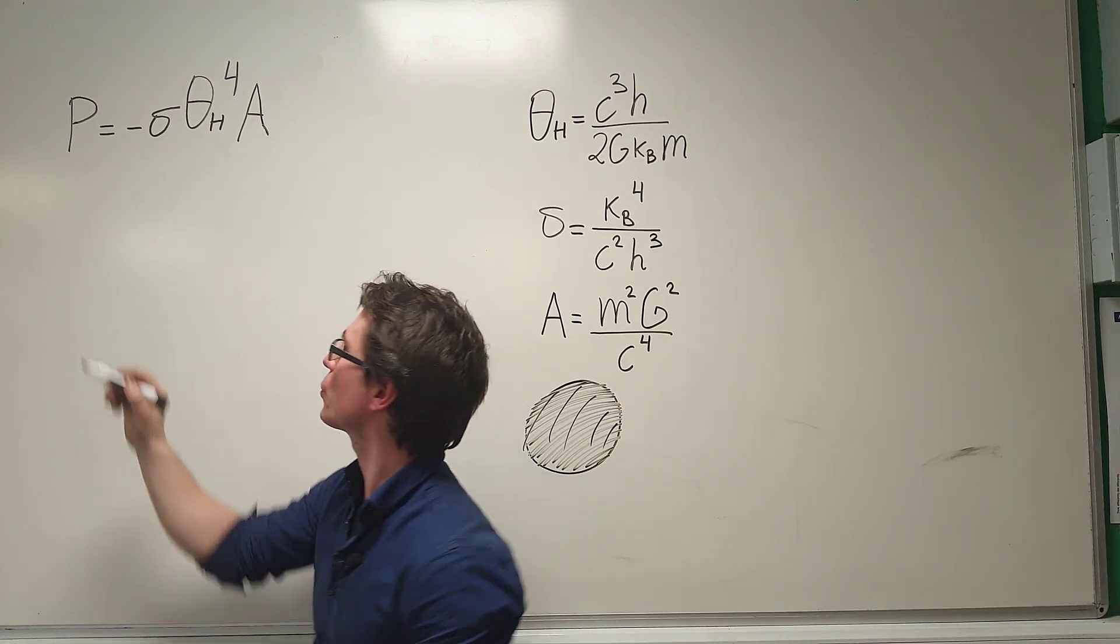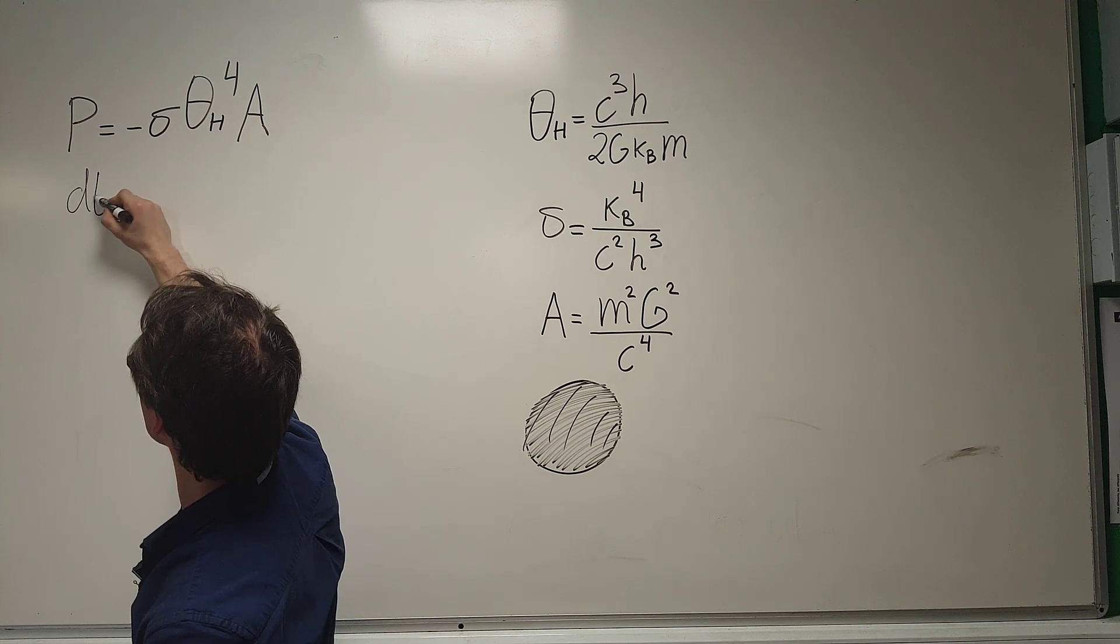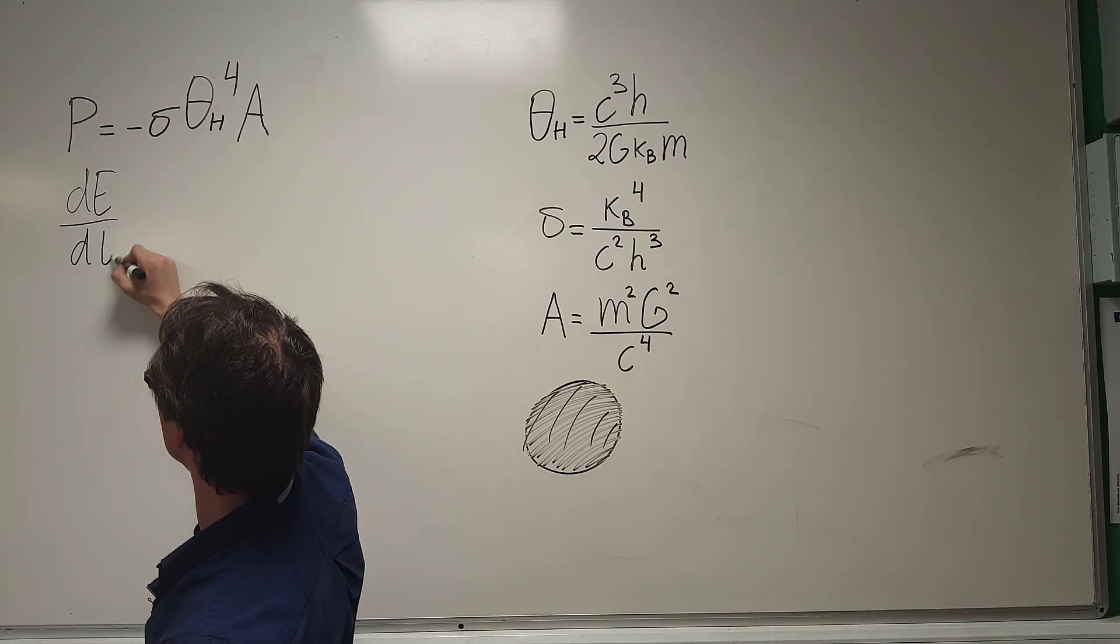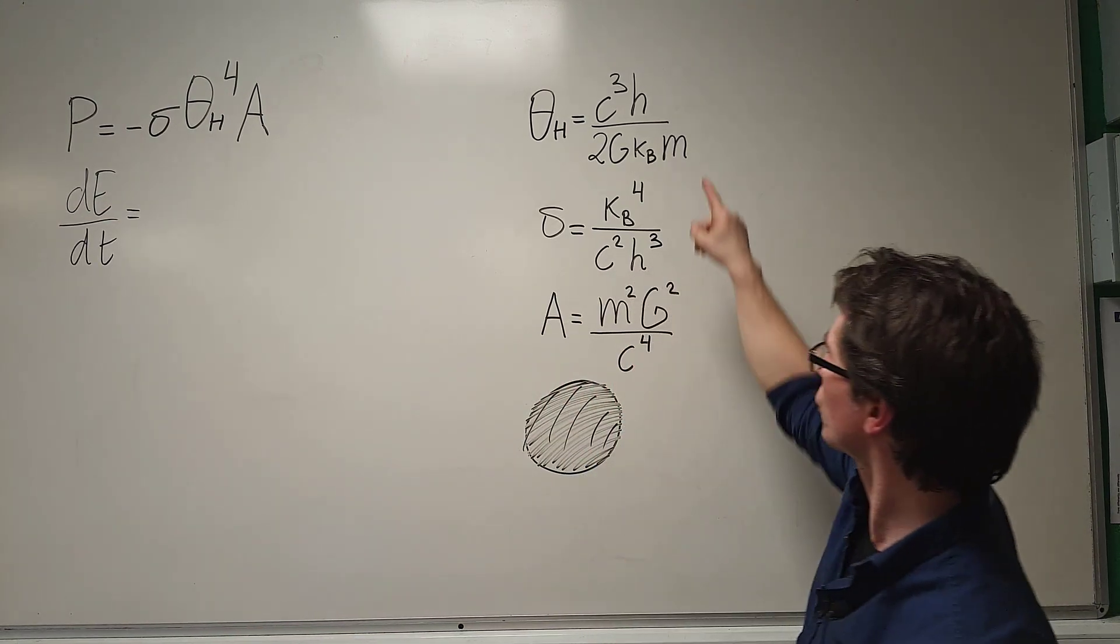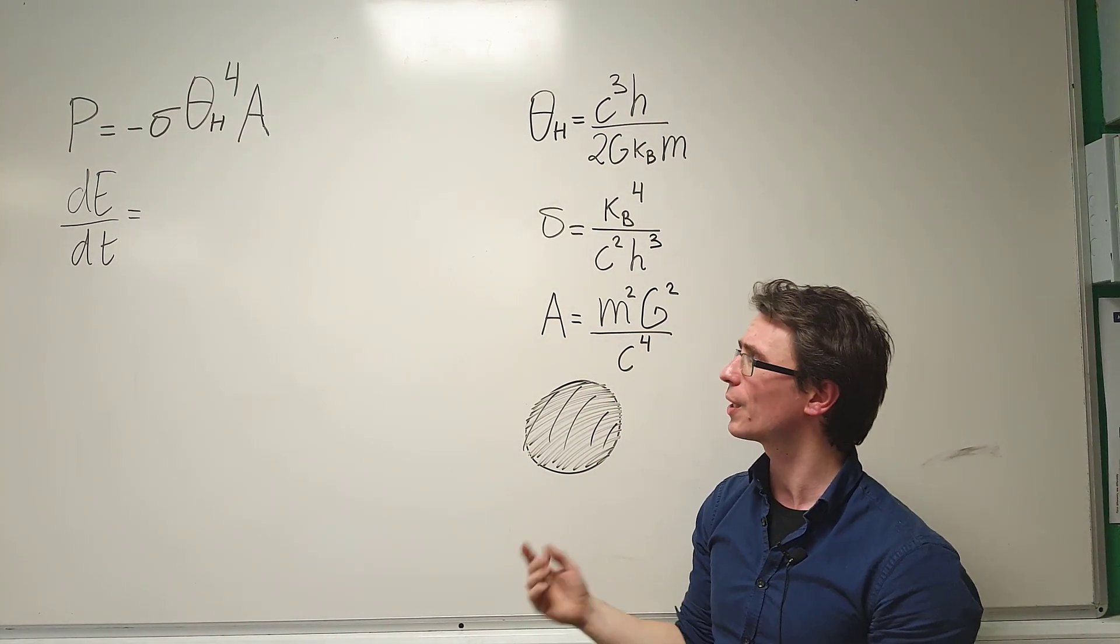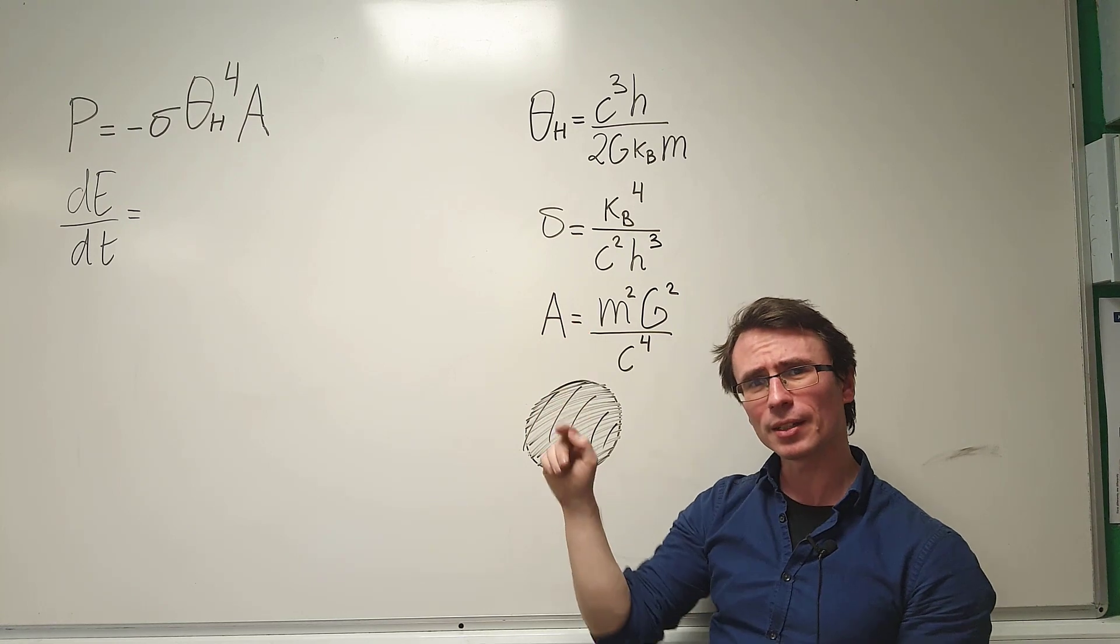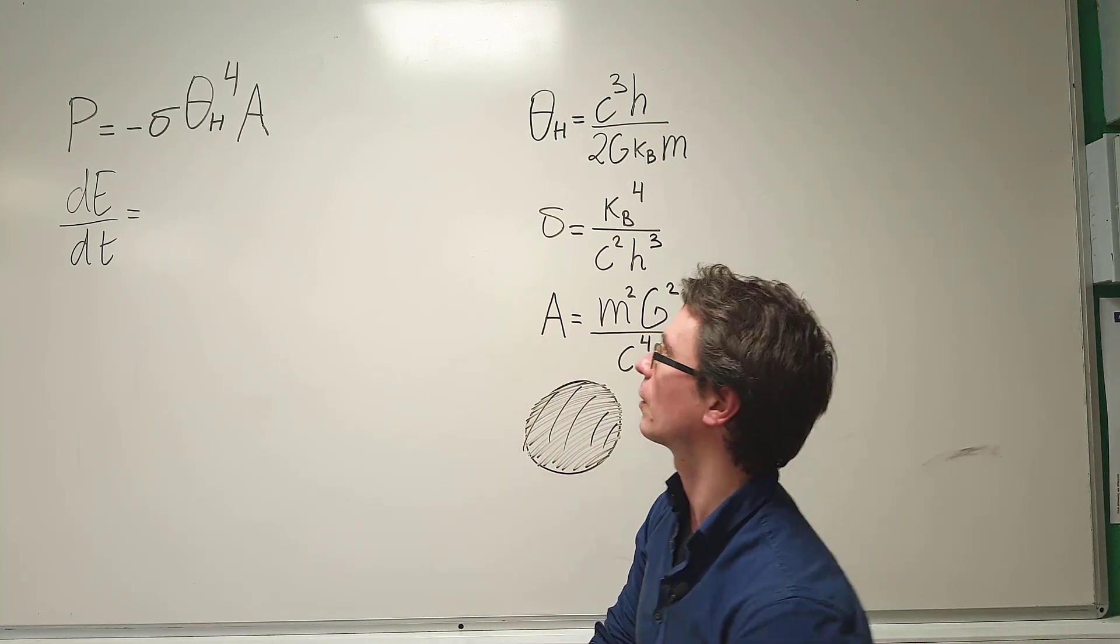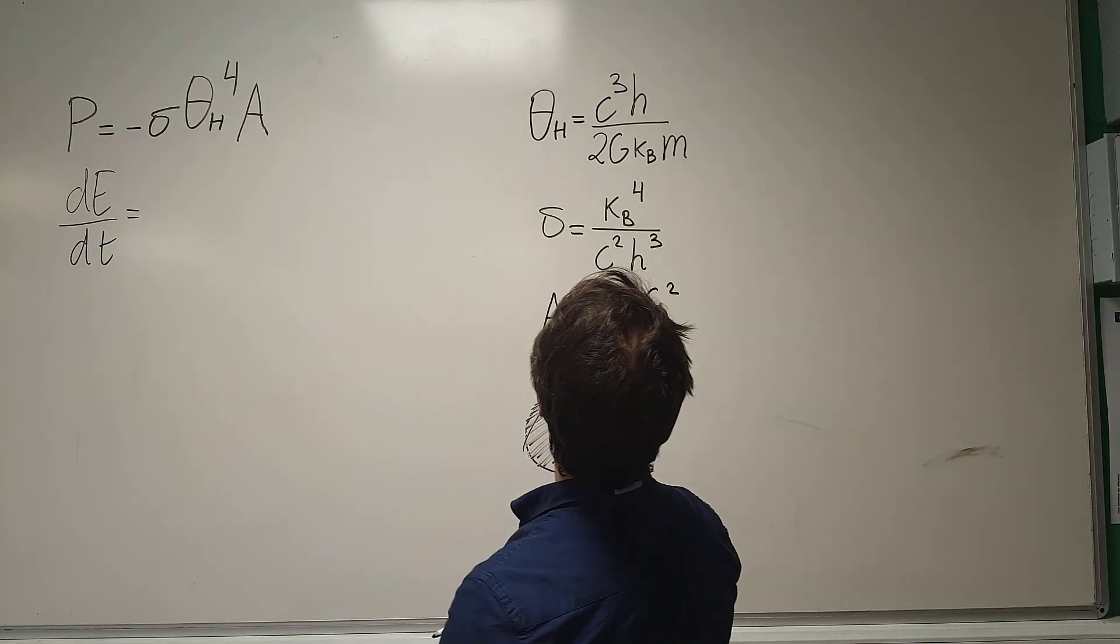Remember, power is just the time derivative of the energy, and what we can do is we can substitute all the expressions that we found out in the previous part of the question and see whether we can find the rate of change of energy of the black hole. So, let's just carefully substitute those.